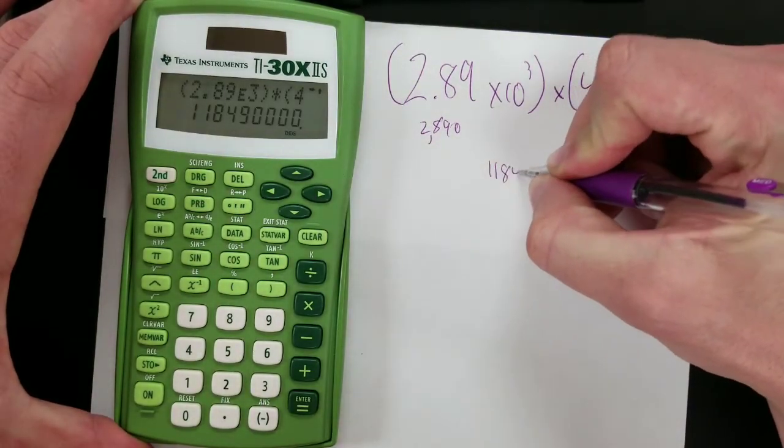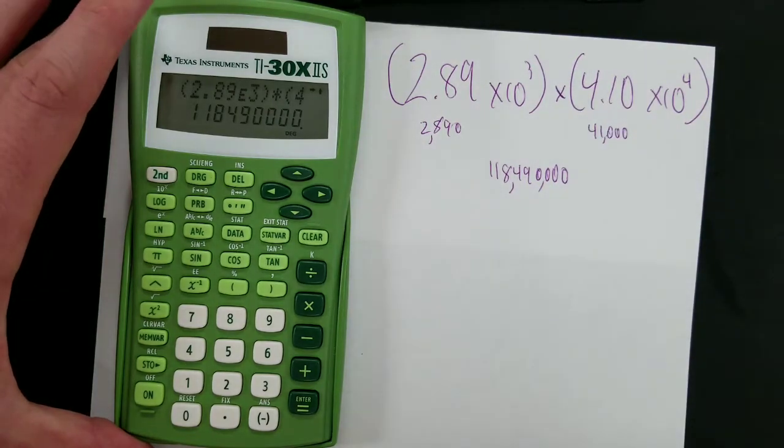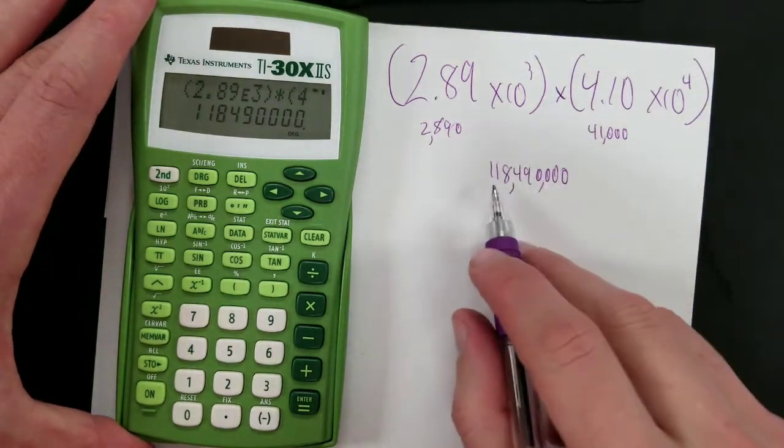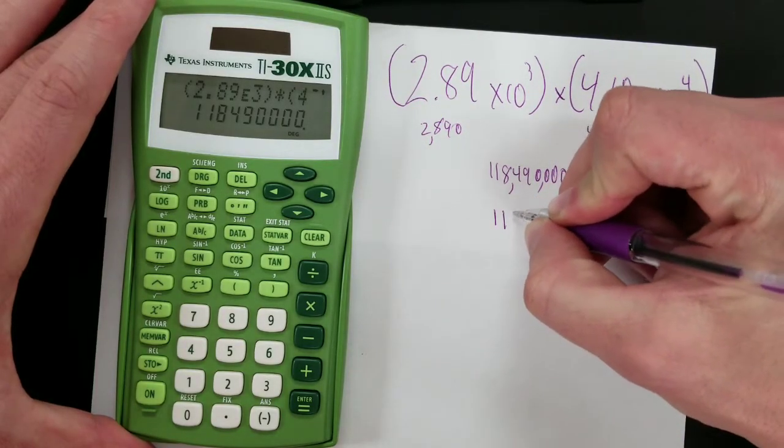1, 1, 8, 4, 9, and then 4 zeros. You put some commas in there and whatever. 3 sig figs, 3 sig figs, so I suppose we would round to 3 significant figures.